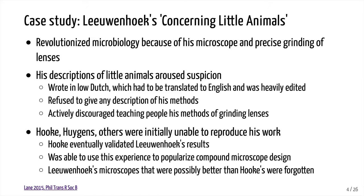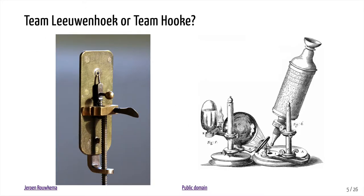After he submitted this work, Hooke and Huygens and others were unable to reproduce it — it would be considered not reproducible. Eventually Hooke was able to validate the results using a compound microscope, and because he made his methods open, he popularized the compound microscope. Even though Hooke's lenses were inferior to Leeuwenhoek's, because Leeuwenhoek didn't make things open, his work was forgotten because no one could replicate it. Here are images of the two microscopes: the Leeuwenhoek microscope on the left and the compound Hooke microscope on the right, which lives with us even to today.